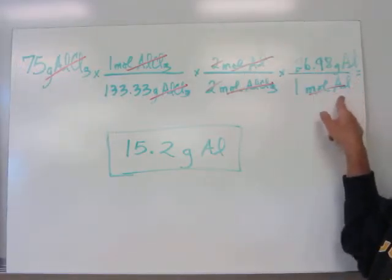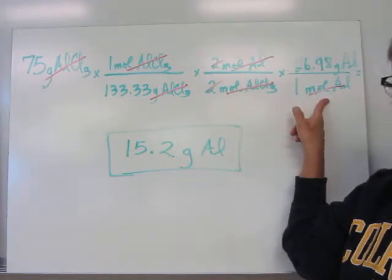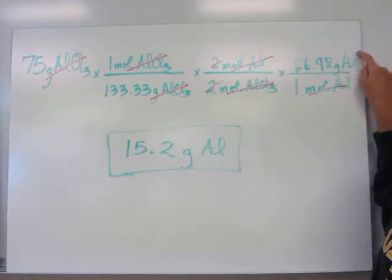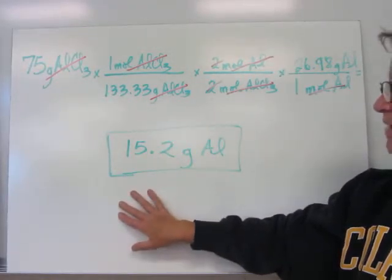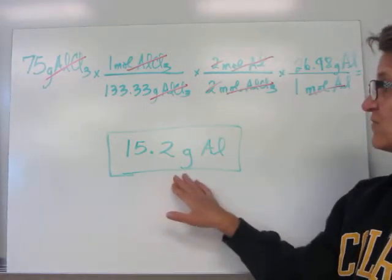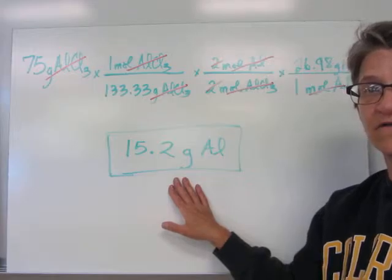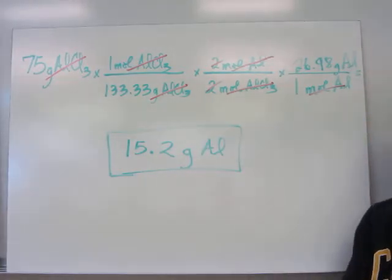Moles of aluminum will cancel with the moles of aluminum in the last step. There's the mass of elemental aluminum, 26.98. Do your math. Round to three sig figs. And it's 15.2 grams of aluminum. Thank you.